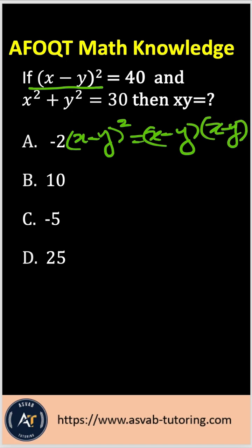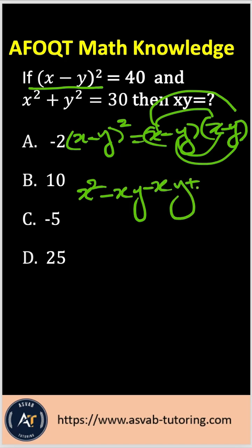If you use the FOIL method and multiply that, let's see what we could get. X times x gives you x squared, minus xy, minus xy, plus y squared.